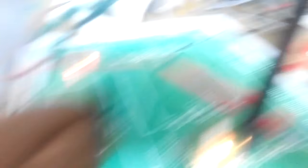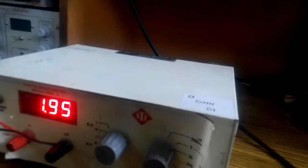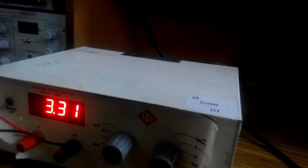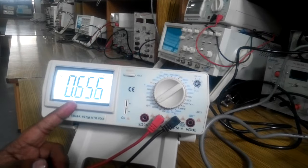Now vary the power supply from 0 to 10 volts in steps of 2 volts. And for every 2 volts note the corresponding reading in the multimeter.